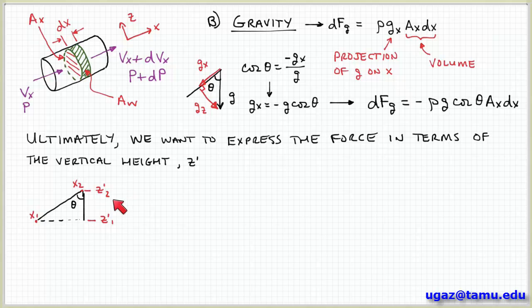So z prime is in the vertical direction, whereas z is orthogonal to the x axis. So I want to express in terms of z prime because that would give me an expression in terms of the height. And that's something that would be more typical for me to measure.